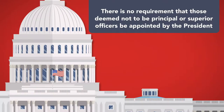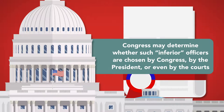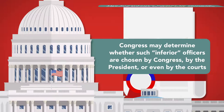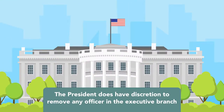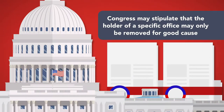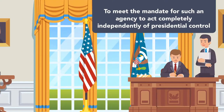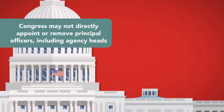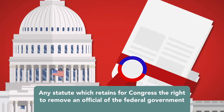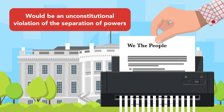There is no requirement that those deemed not to be principal or superior officers be appointed by the President. Congress may determine by statute whether such inferior officers as well as agency employees are chosen by Congress, by the President, or even by the courts. The President's power to remove agency heads is also not absolute. While the President does have discretion to remove any officer in the executive branch, Congress may stipulate by statute that the holder of a specific office may only be removed for good cause. This limitation is particularly important when dealing with independent agencies. To meet the mandate for such an agency to act completely independently of presidential control, it is imperative that a President not be permitted to remove the head of the agency simply for making decisions with which the President disagrees. Note that Congress may not directly appoint or remove principal officers, including agency heads. Any statute which retains for Congress the right to remove an official of the federal government who operates in an executive capacity would be an unconstitutional violation of the separation of powers.